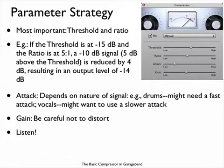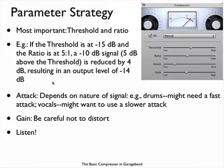I encourage you to set these parameters in the order that they're given in the pop-up window. The two most important parameters are threshold and ratio. To give you a concrete example: if the threshold is at -15 dB and the ratio is 5 to 1, and you have an incoming -10 decibel signal — which is 5 decibels above the threshold — the resulting output signal will be compressed at a level of -14 decibels.